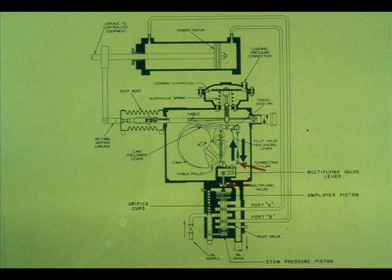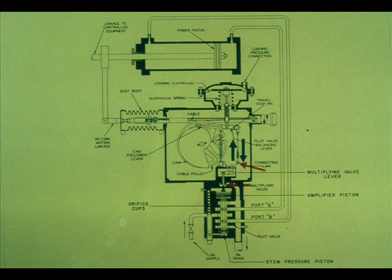With the supply on and zero input pressure, adjust the link until the power piston will remain in approximately mid position without creeping. This aligns the pilot valve in a neutral position. The ports A and B are closed.